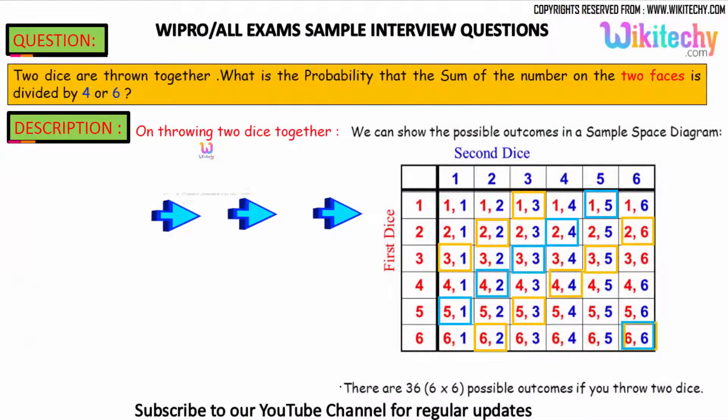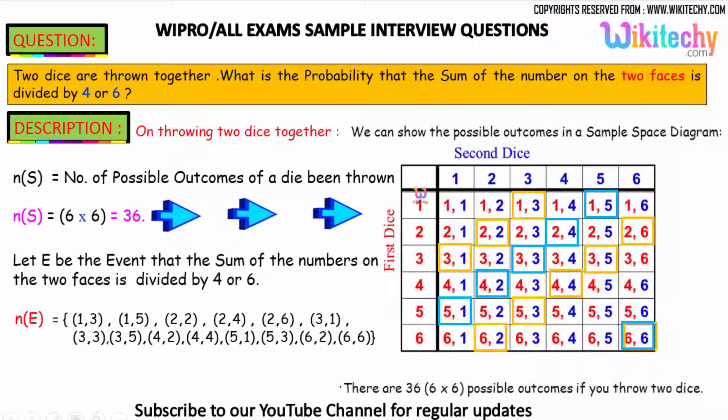Divisible by 4 or 6. I have the first die here and the second die here. When thrown, we get combinations from (1,1), (1,2), (1,3) all the way up to (6,6).